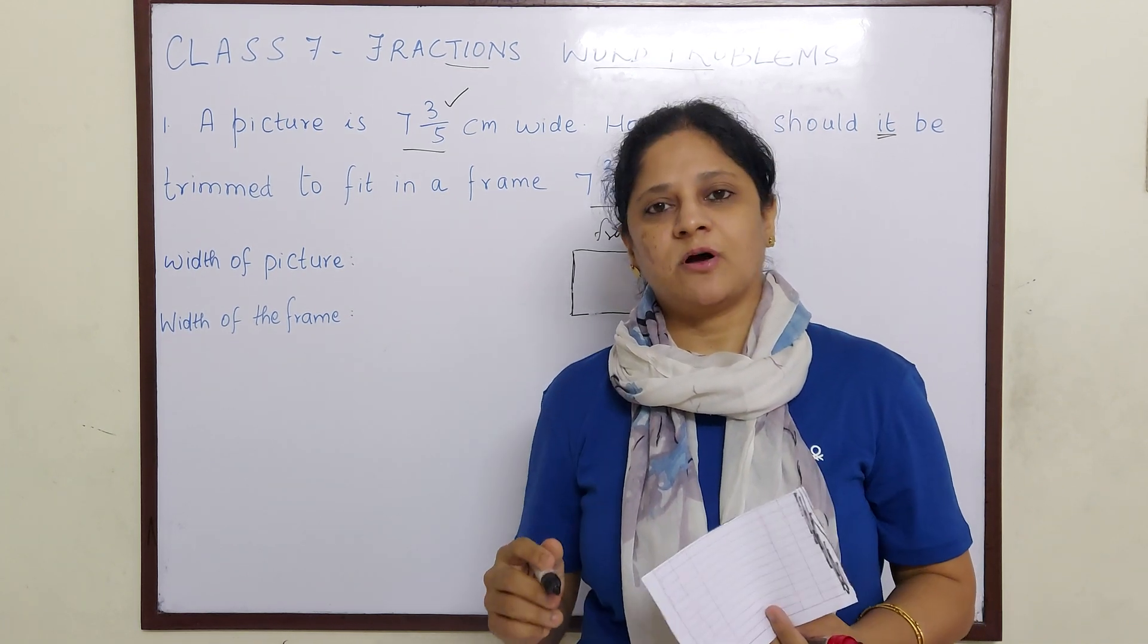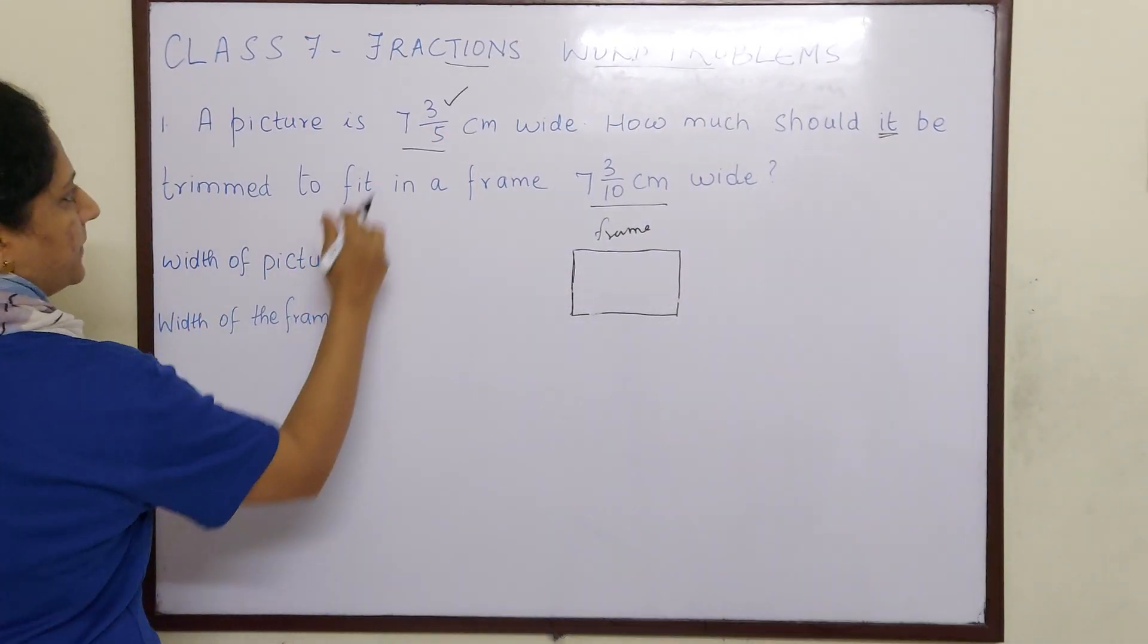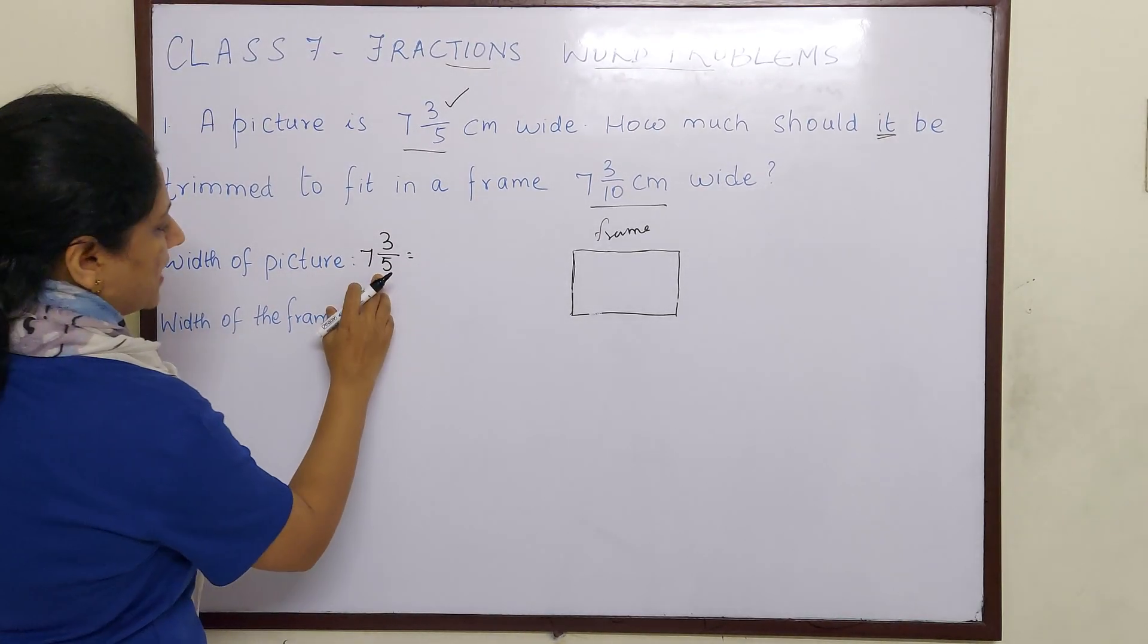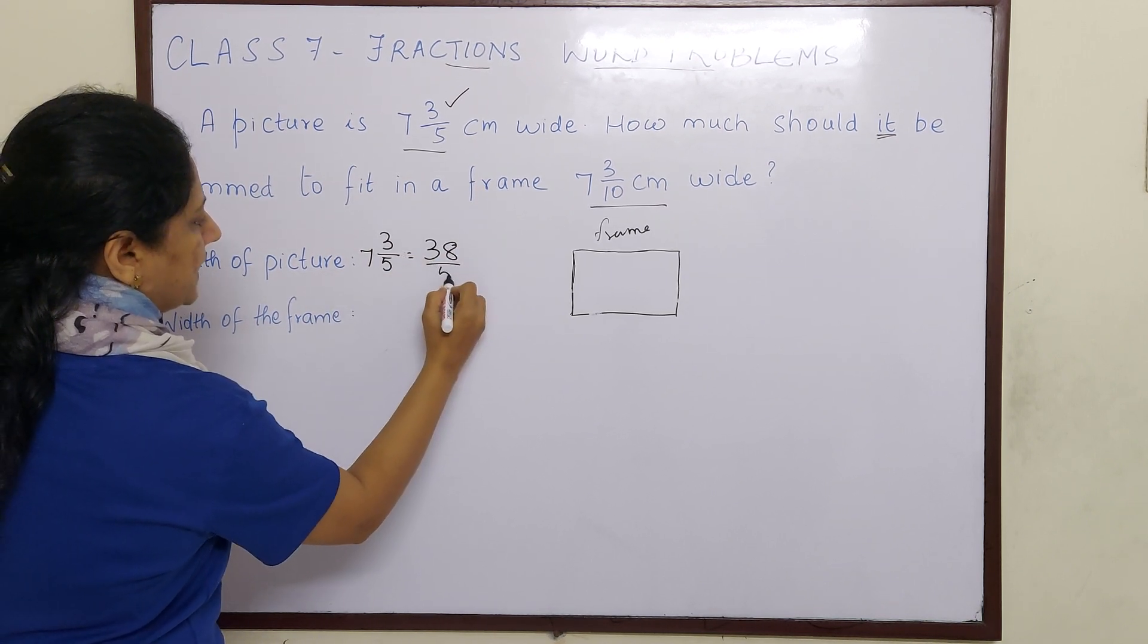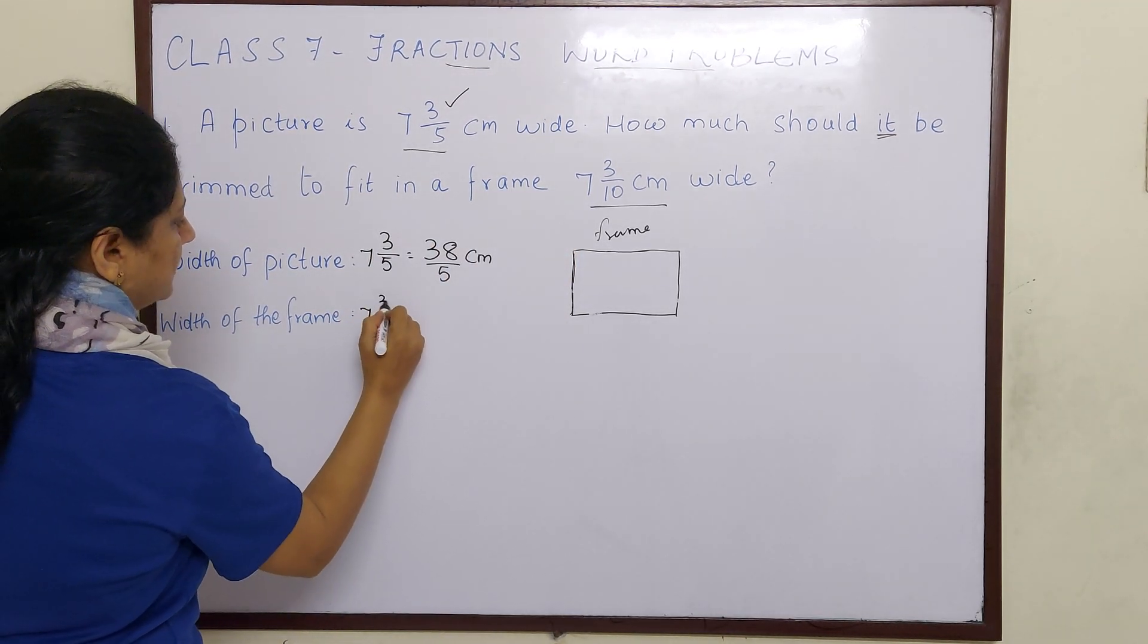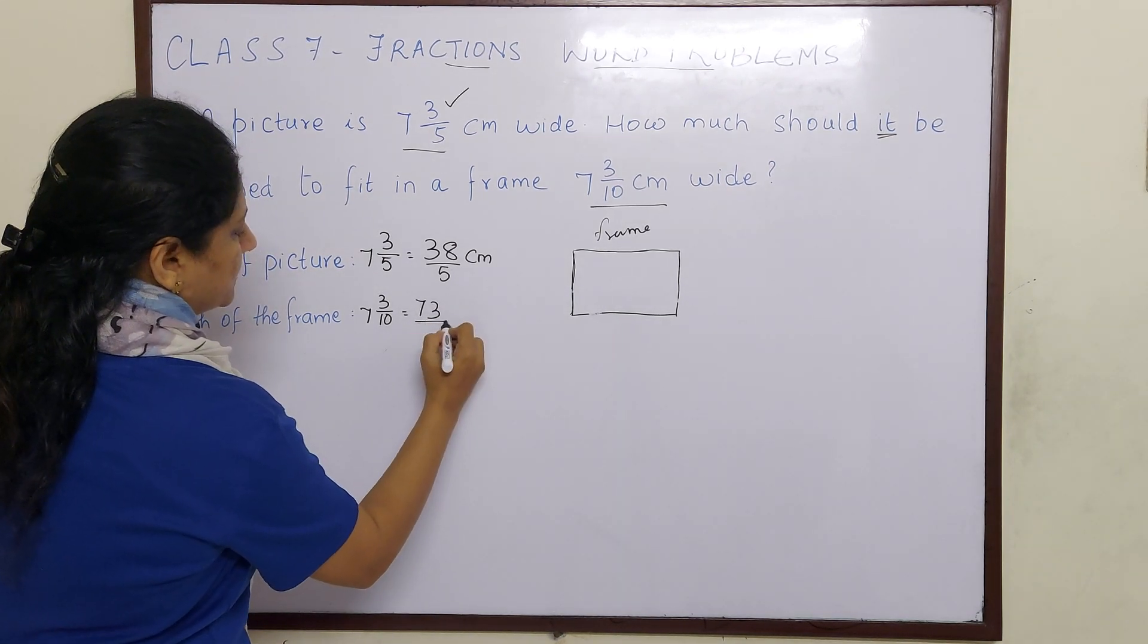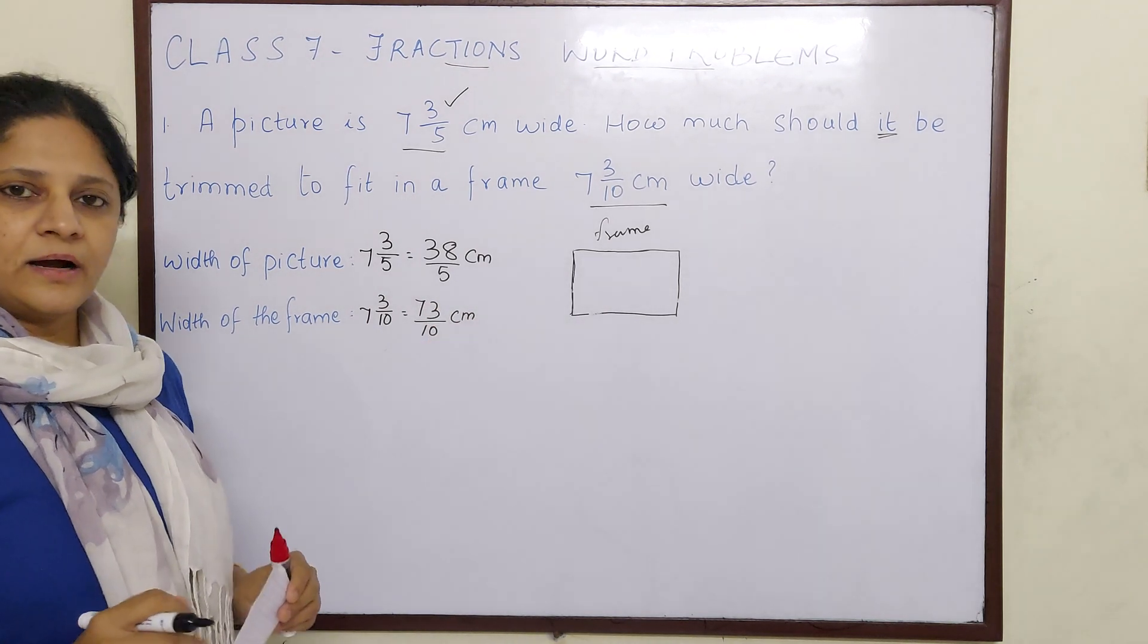So this is a case of subtraction of fractions. Let us write width of the picture is 7 3/5. Now this is in mixed fraction. Let us convert it into improper fraction. 5 times 7 is 35, 35 plus 3 is 38/5 cm. Then the frame is 7 3/10. 10 times 7 is 70, 70 plus 3 is 73/10. So now we have converted both picture and width of the frame into improper fraction.